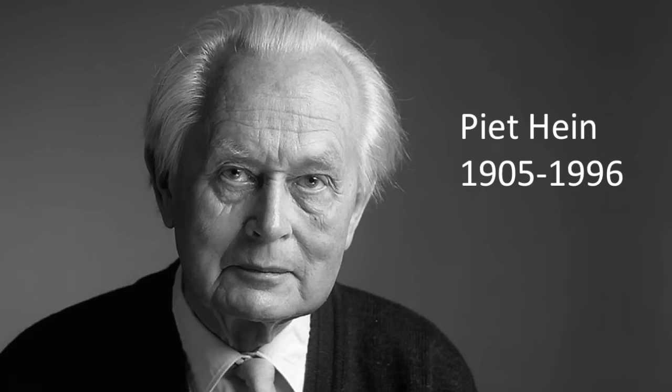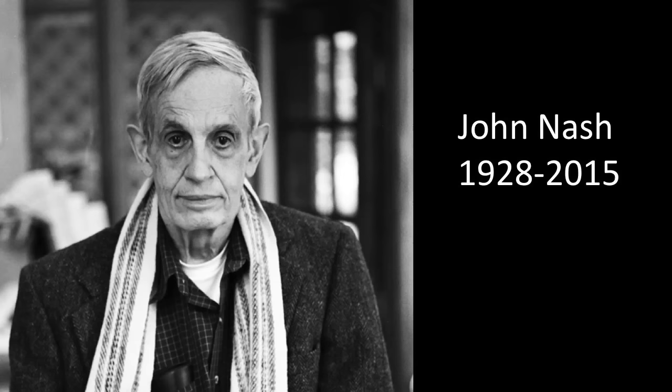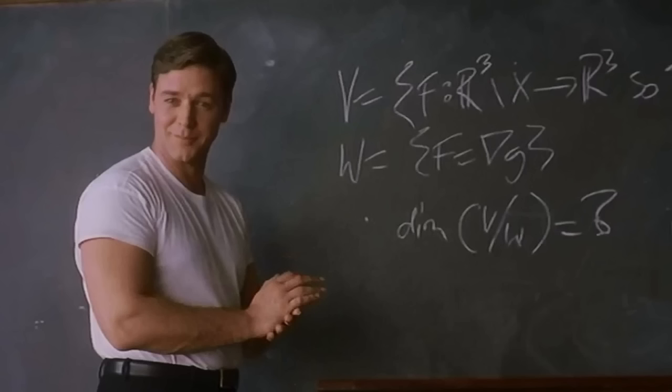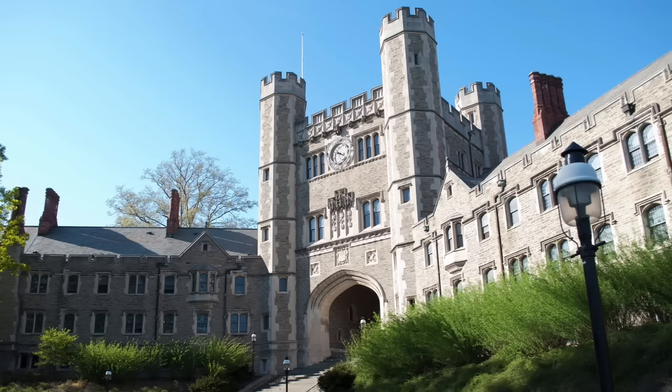Hex was first invented by Danish mathematician Piet Hein in 1942 and independently in 1947 by John Nash, who, by the way, never looked anything like Russell Crowe.